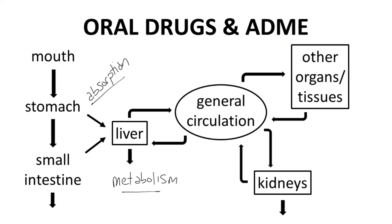Metabolism can occur in other organs and tissues, but the liver is the main site of metabolism — that is hepatic metabolism. It's worth noting that the intestinal lining is also rich in metabolic enzymes, and metabolism in the intestinal wall can reduce absorption.